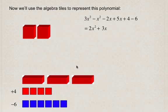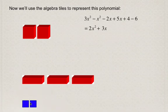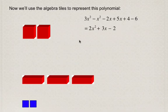Next, considering the constants, each of the negative ones cancels out a positive one, and we're left with two blue squares — each representing negative 1 — so positive 4 minus 6 equals negative 2. Our simplified polynomial is 2x squared plus 3x minus 2.